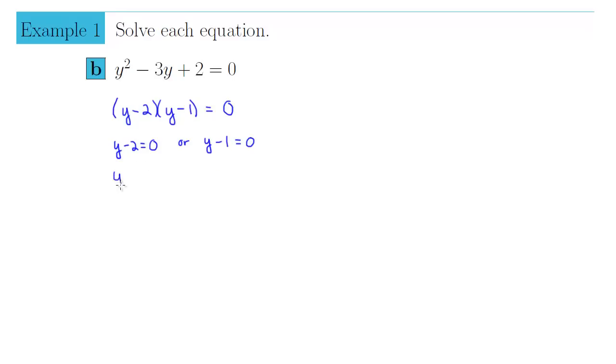This means that y has to be 2, simply add 2 to both sides to achieve that, or y has to be 1, add 1 to both sides.